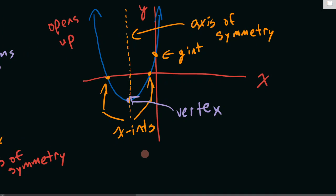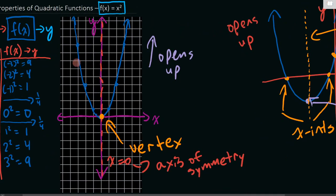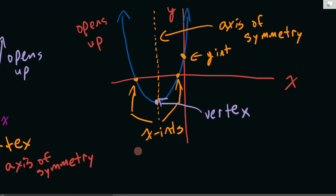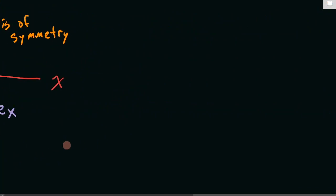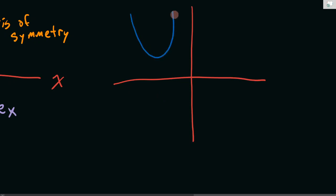So as we saw in our first example, this quadratic had one x-intercept. This quadratic had two x-intercepts. Is it possible to have a quadratic with no x-intercepts? And sure enough, we can. All that we need to do is get a quadratic that opens up above the x-axis or a quadratic that opens down below the x-axis.